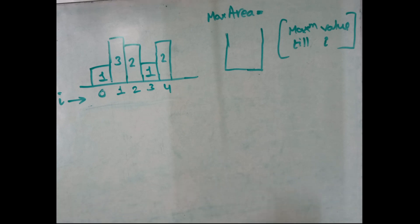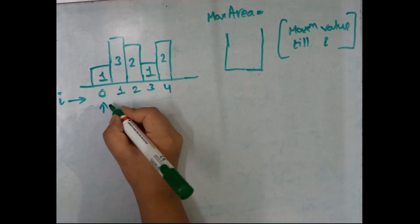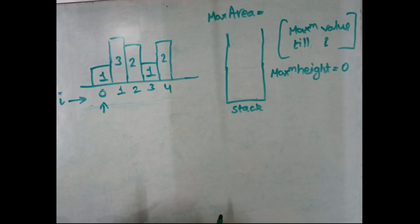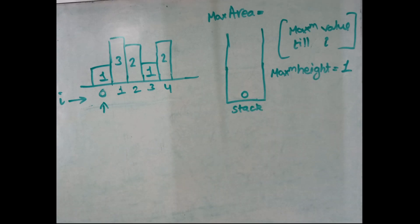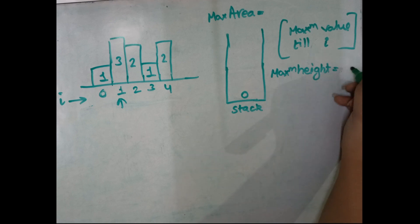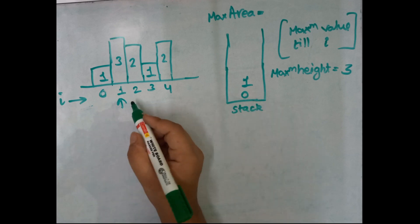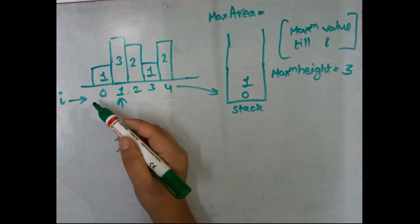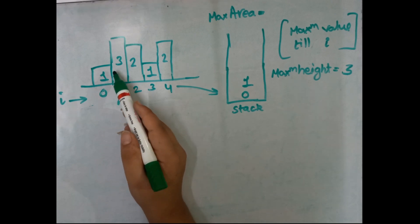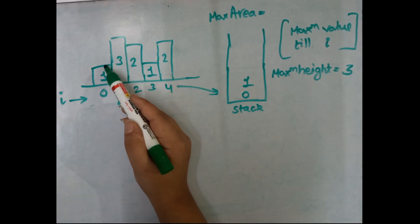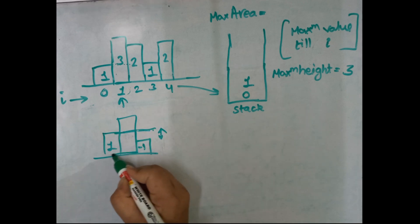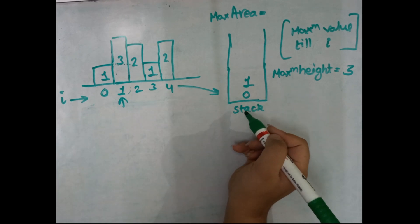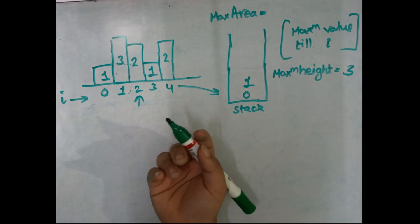We'll implement this using a stack that contains maximum values up to index i. Initially the stack is empty and maximum height is 0. At index 0, height is 1, so maximum height becomes 1 and we push index 0. At index 1, height is 3 which is greater than 1, so maximum height becomes 3 and we push index 1. We don't calculate area for 1 yet because the next element might be greater and extend the rectangle.